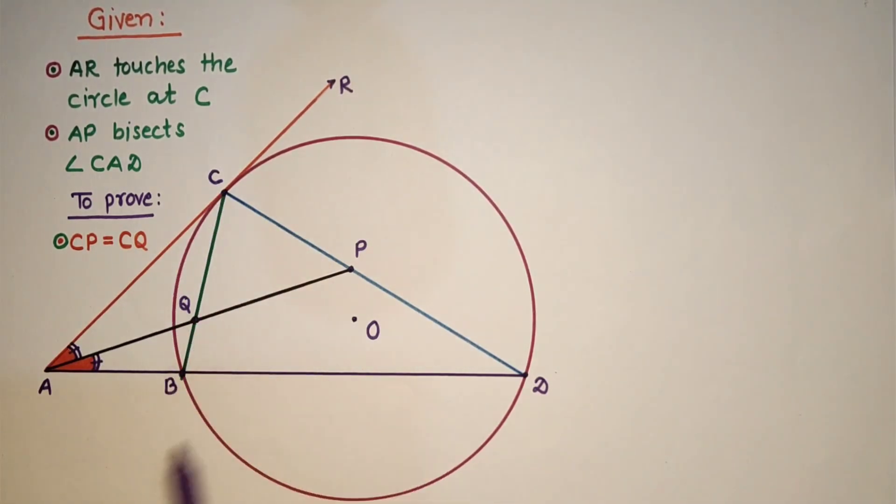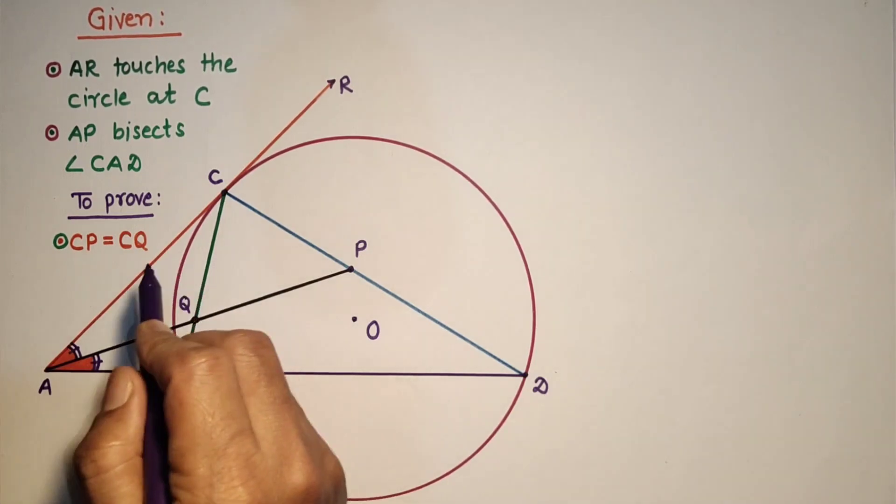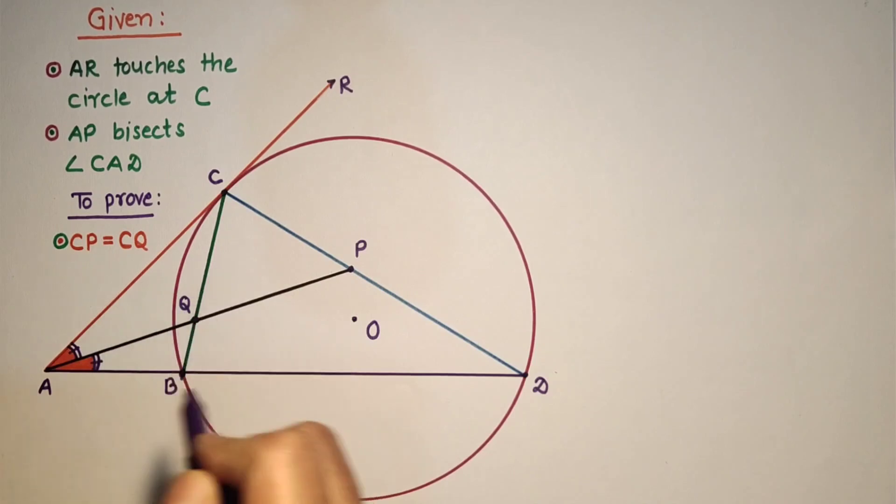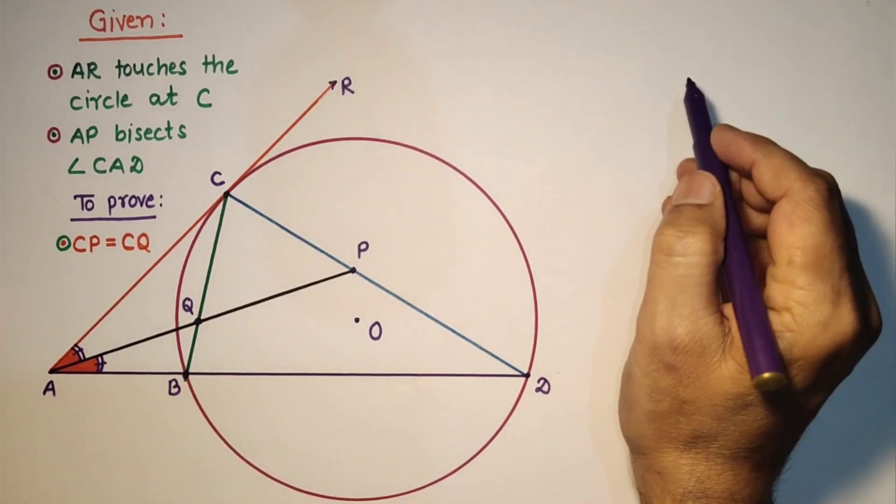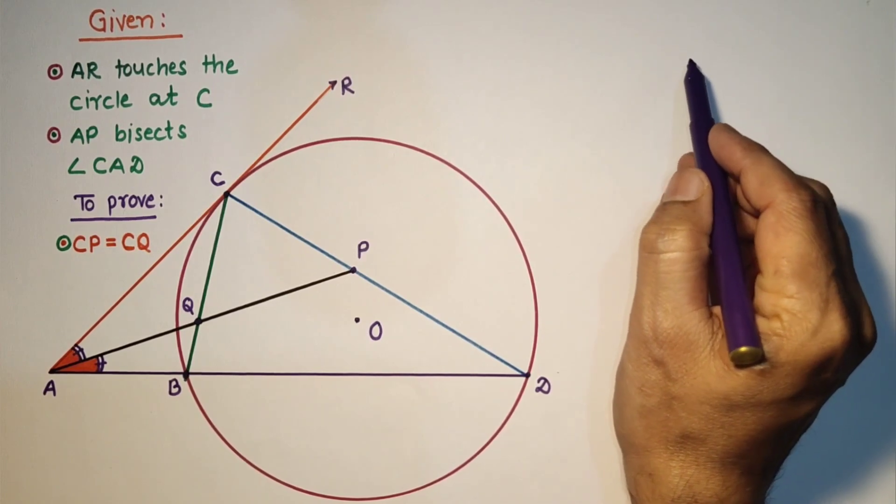To prove this we will use the tangent chord theorem, or we can say alternate segment theorem. That is, if a tangent touches a circle at any point...